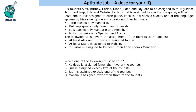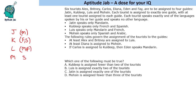Some rules are given about tourist assignment: at least Alex and Brittany are to be assigned to Louis, at least Diana is assigned to Mohsen, and if Carlos is assigned to Kuldeep, then Eden speaks Mandarin. So J, K, L, M are the four guides — Jatin speaks Mandarin, Kuldeep speaks French and Spanish, Louis speaks Mandarin and French, and Mohsen speaks Spanish and Arabic.